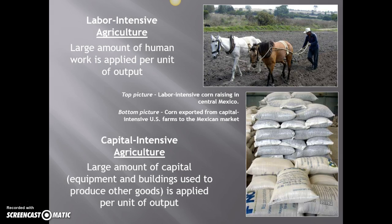We can also talk about agriculture in terms of labor intensive versus capital intensive — these are studies in contrast. Labor intensive agriculture means lots of human work, lots of human beings putting in lots of time and physical labor. Capital intensive agriculture, on the other hand, involves lots of equipment and buildings but a lot less human labor to get a given unit of output. In the US, we tend to do a lot more capital intensive agriculture, which tends to be larger-scale operations in more developed countries. Labor intensive agriculture tends to be smaller scale and is more likely found in subsistence farming economies.